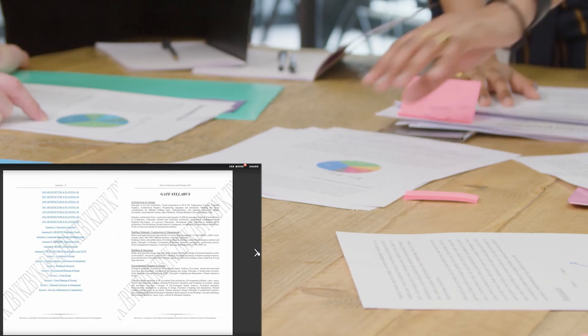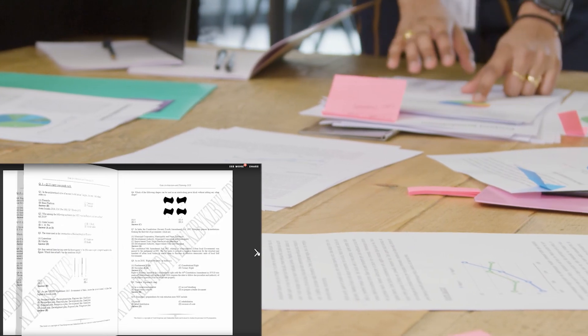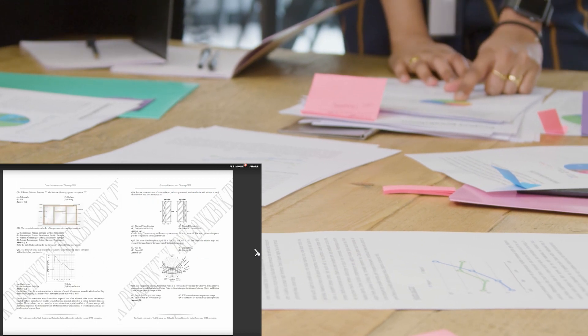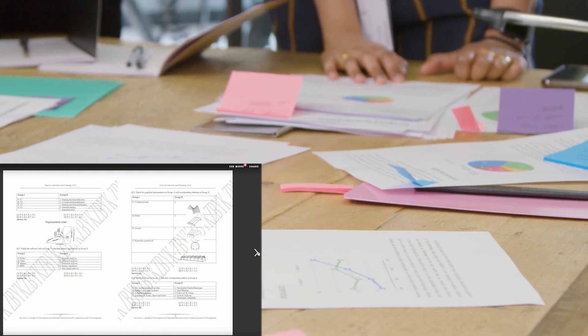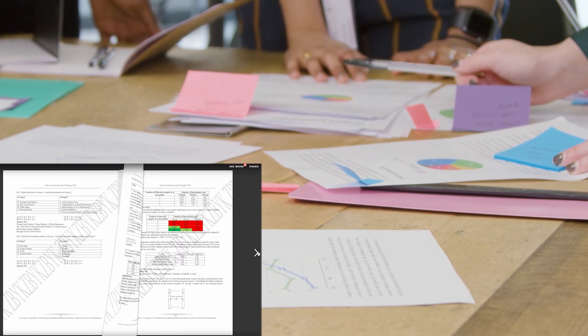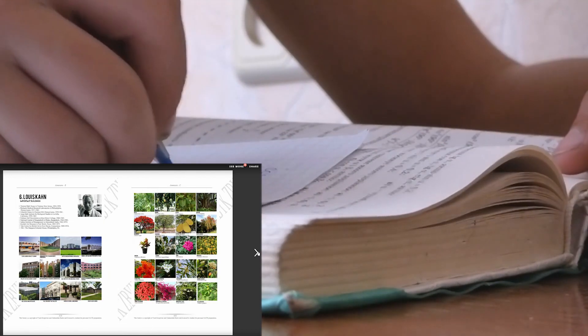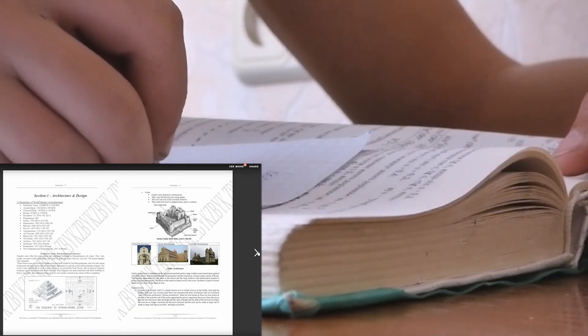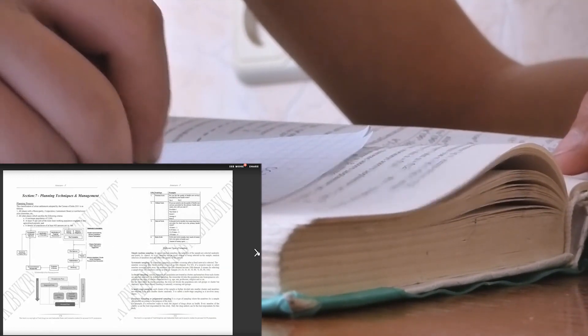They have made this book in a systematic way so that anyone can read it. They are not only providing you the previous year's question papers but are also including short study material according to the syllabus, and you will get section-wise notes. They have given you basics from unit conversion to architects and their works, which will save you a ton of time.